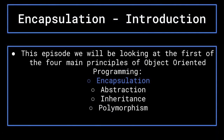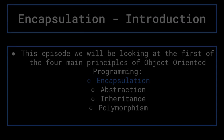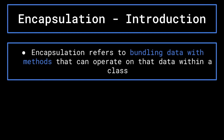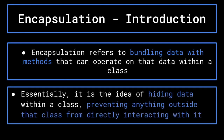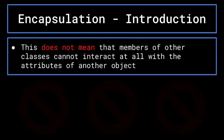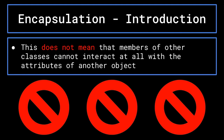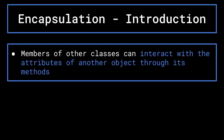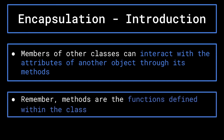This next section is going to be focusing on the first of the four main principles of object oriented programming: encapsulation. Encapsulation refers to bundling data, along with methods that can operate on that data, within a class. Essentially, it is the idea of hiding data within a class such that anything outside that class cannot directly interact with it. That is not to say that they are unable to interact with a separate object's attributes at all. Instead, members of other classes looking to interact with the attributes of an object should only be able to do so through that class's methods.